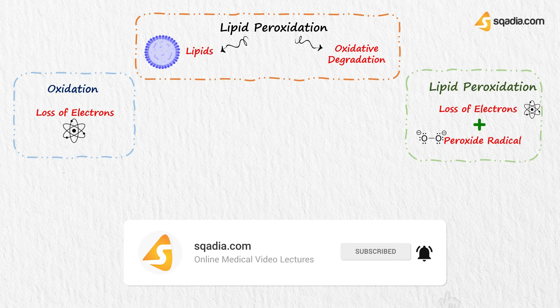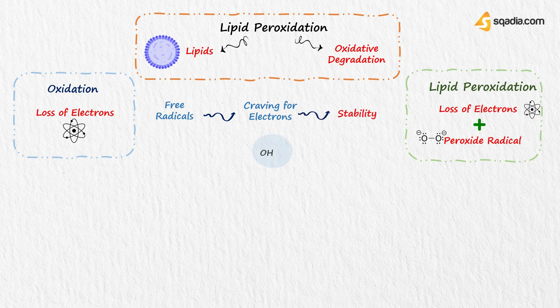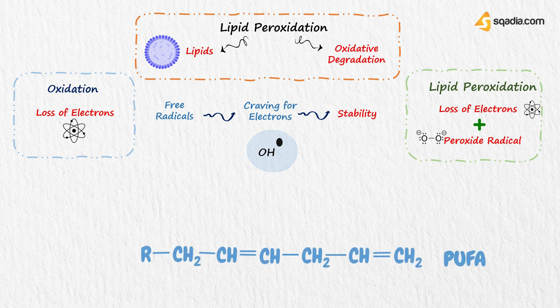Free radicals are craving for electrons to achieve stability, for example OH, that is shown by an unpaired electron on OH. Polyunsaturated fatty acids are prone to undergo peroxidation. They are called unsaturated, as there are at least two double bonds present in the chain.